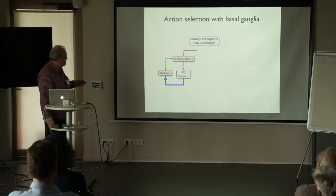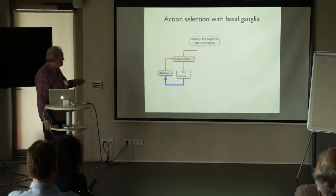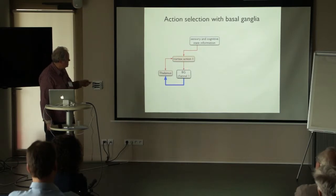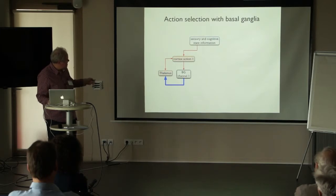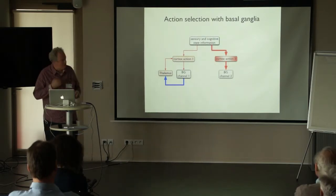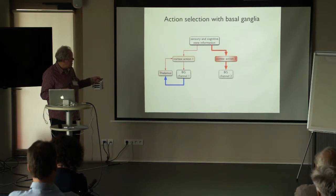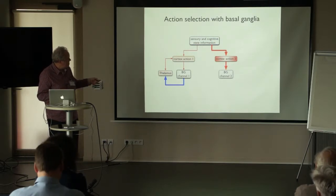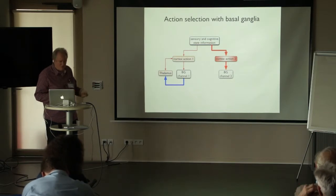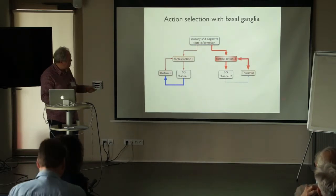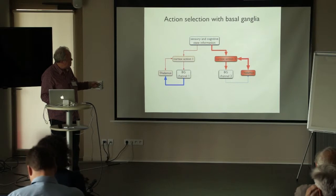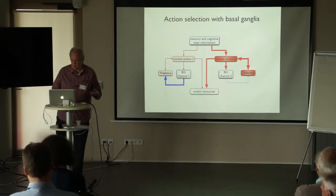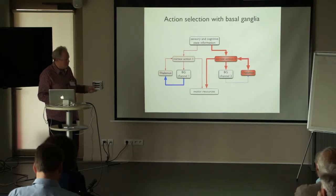The basal ganglia, as you're probably aware, exerts tonic inhibition on its targets. Here, this action request has a weak salience and the tonic inhibition has not been removed. As a result, the thalamocortical loop can't engage in any sensible reverberatory feedback activity and that action is not selected. In contrast, if there's a strong stimulus to initiate another action, this will result in a large, high-salience action request and the inhibition will be released on the target. This thalamocortical loop can reverberate with a positive feedback loop; the cortex becomes highly active and can engage with the motor resources.